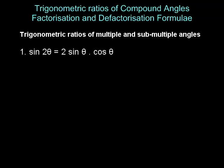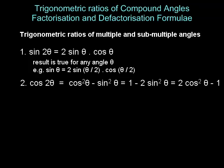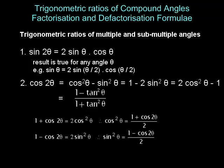Sine 2 theta is 2 sin theta cos theta. Note that this result is true for any angle theta. For example, sin theta equals 2 sin of theta by two into cos of theta by two. Cos 2 theta equals cos squared theta minus sin squared theta, also equals 1 minus 2 sin squared theta, also equals 2 cos squared theta minus 1, and finally equals 1 minus tan squared theta upon 1 plus tan squared theta. Rearranging, 1 plus cos 2 theta equals 2 cos squared theta, so cos squared theta equals 1 plus cos 2 theta upon 2.